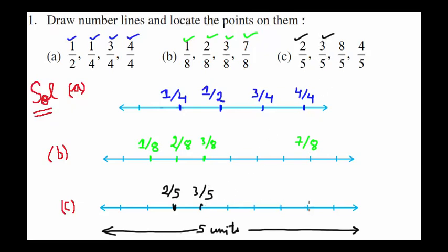And eight over five, that is eighth part of this five-unit length. And the last one being fourth part of five-unit length. This is the fourth part. We are done with question number one. This is our answer.